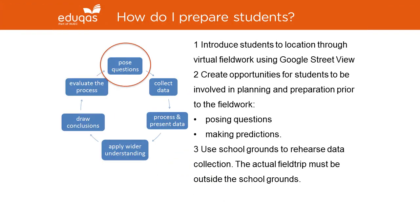The first stage of the inquiry process is about preparation and posing questions, and it is important that students are involved in this part of the inquiry. There are a number of ways you could do this. For example, through introducing students to the location they are about to visit through an online map or satellite image, perhaps using Google Street View. You might also want to create opportunities for students to be involved in planning and preparation by posing questions and making predictions based on the images that they have seen. As mentioned before, you are not allowed to use the school grounds for the actual piece of fieldwork, but you can use the school grounds to rehearse data collection.